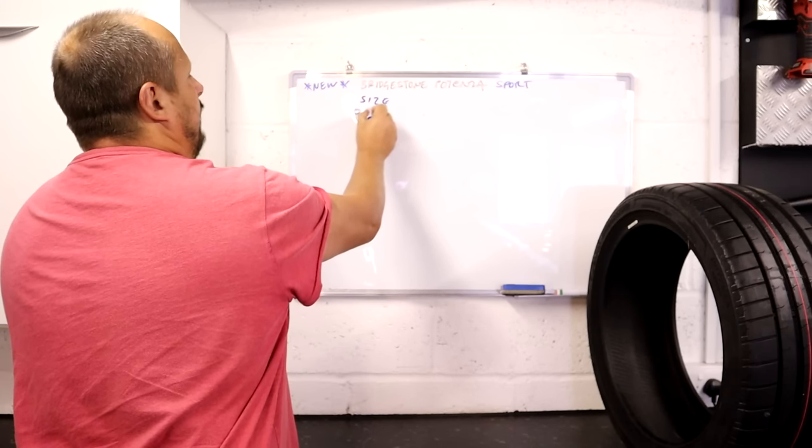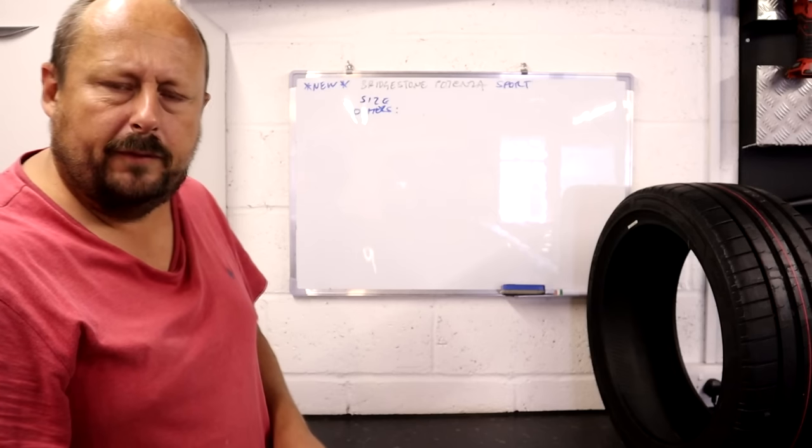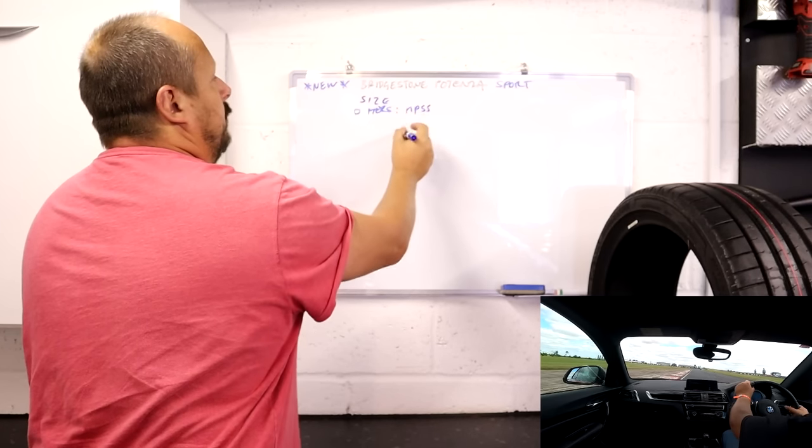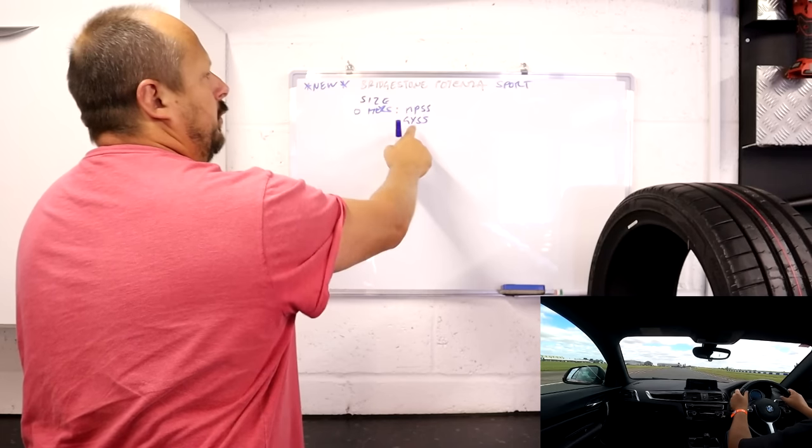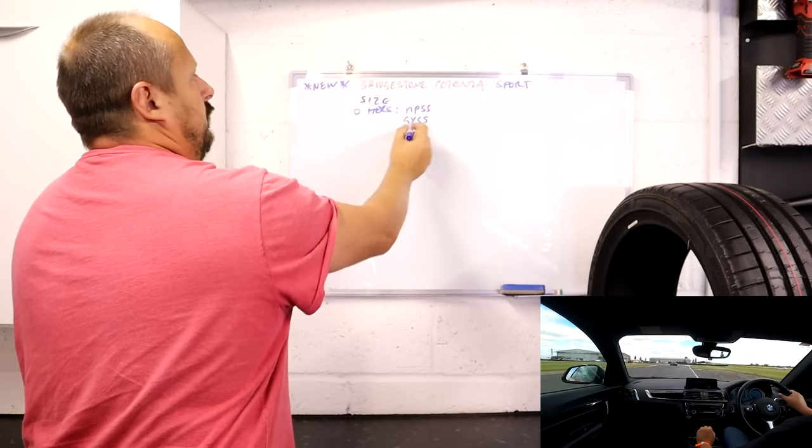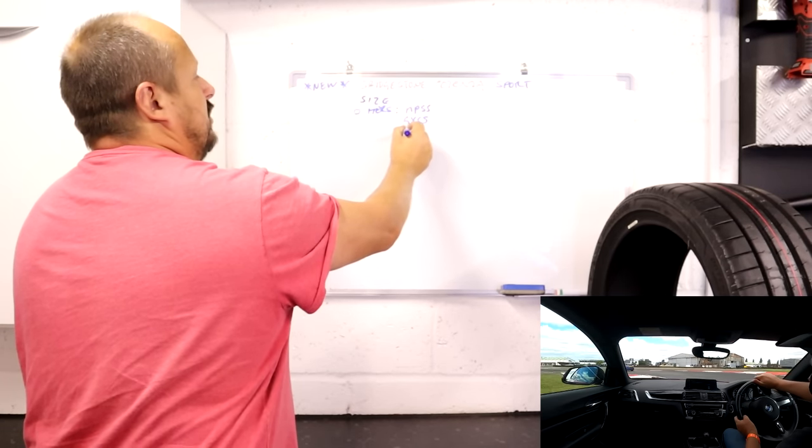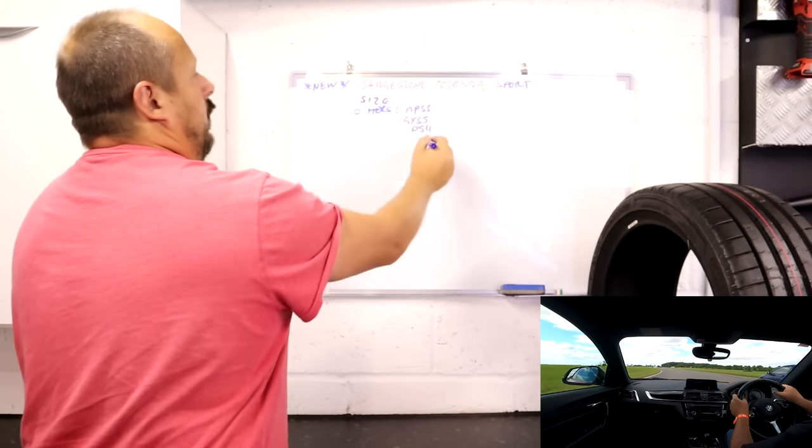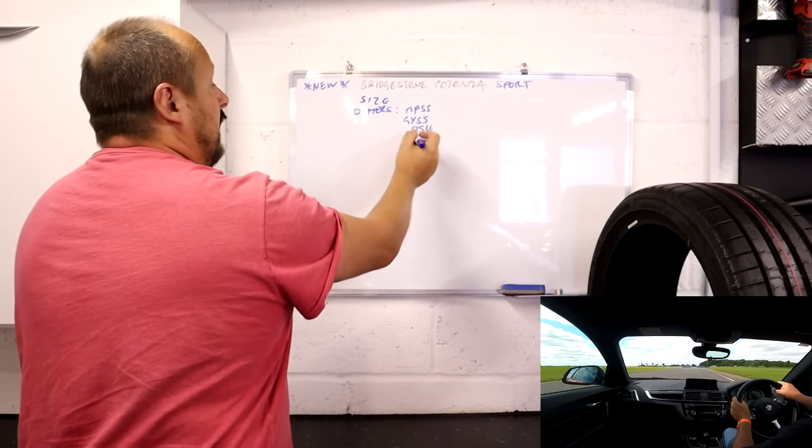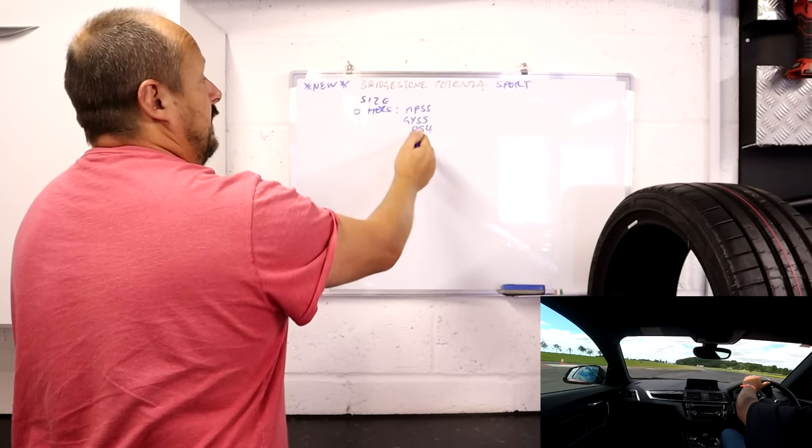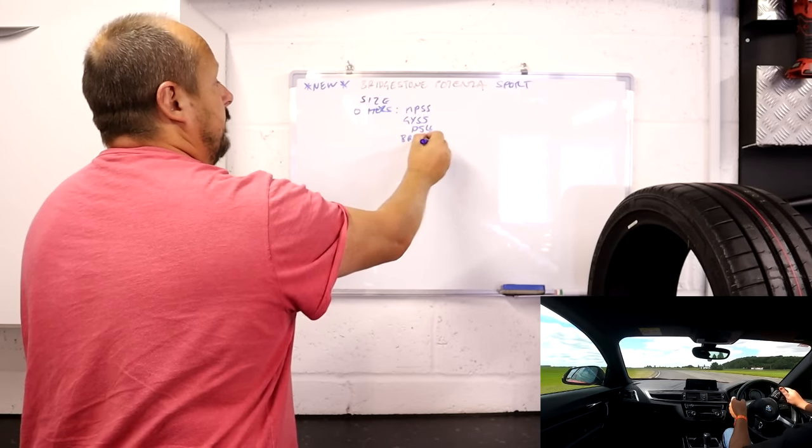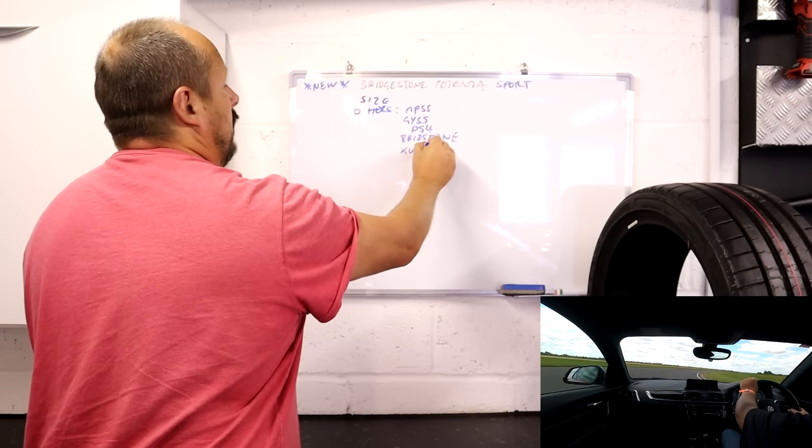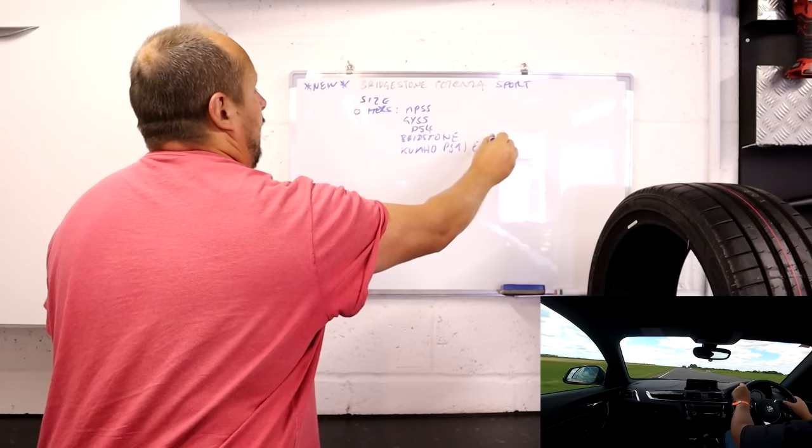Now, other options. It's always important to talk about other options for this ultra high performance, primarily road tire that you could use on track. Well you have the discontinued Michelin Pilot Super Sports, you have the Goodyear Super Sports, relatively new tire as well. You have the Michelin PS4, they don't do the 4S's in the 18 inch standard size. You've also got the Kumho PS91 Ecsta. Now that moves us on to talking about price.